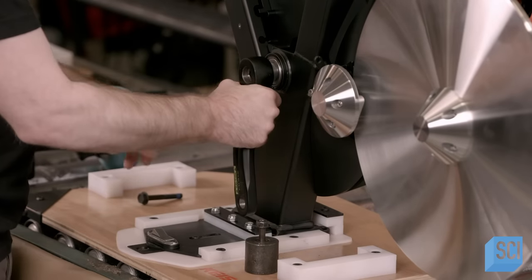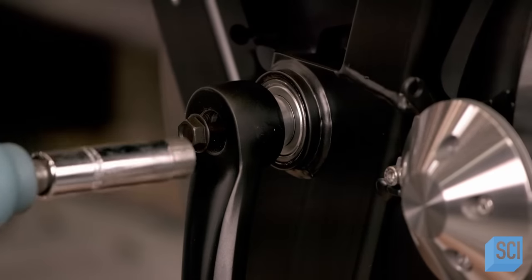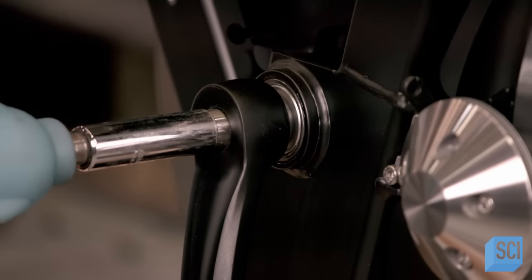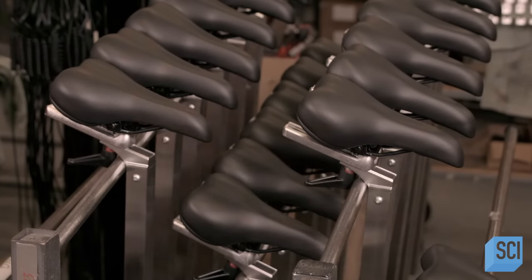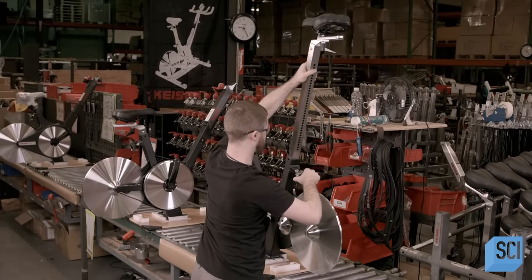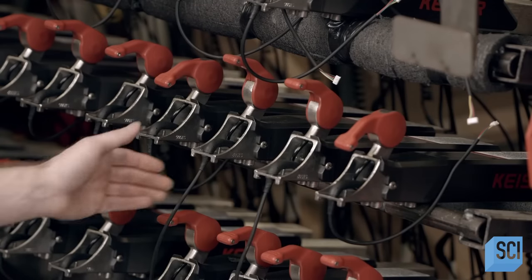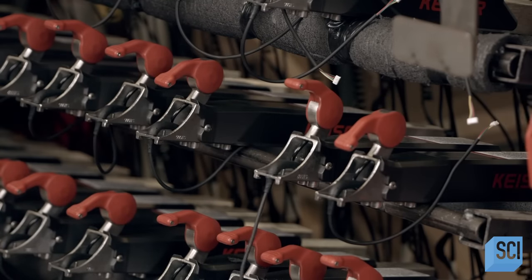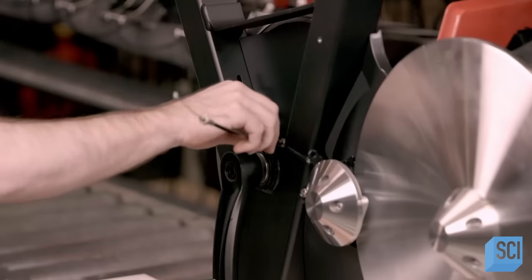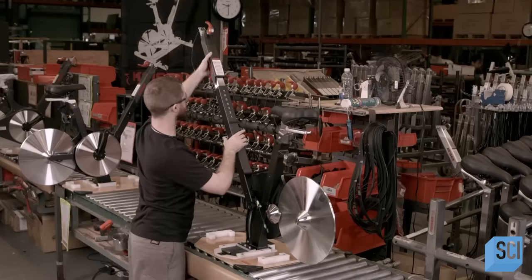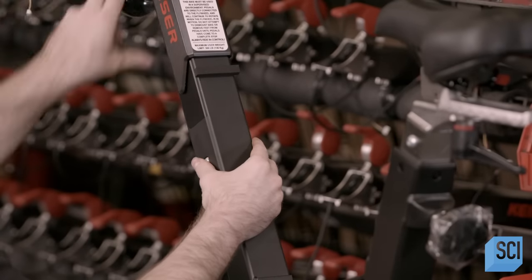He bolts the second crank arm to the axle and torques it to the specified tension. Next up is the seat assembly. He slides the seat stem into the post and tightens the adjustment knob to lock it in place. He inserts the handlebar post into the bike frame and fishes the gear cable and communication wires through it. He secures the handlebar post with the adjustment knob.